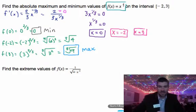Okay, so let's take the second example here. 1 over the square root of 4 minus x squared, and let's find some extreme values for that.